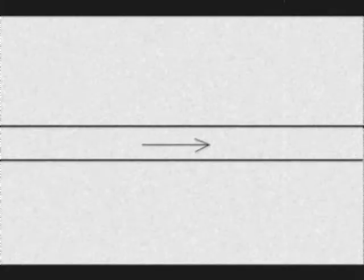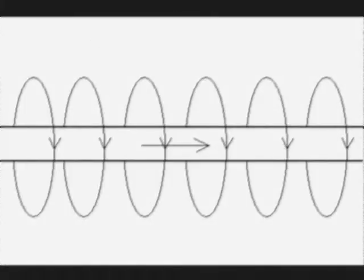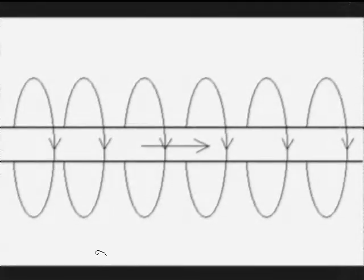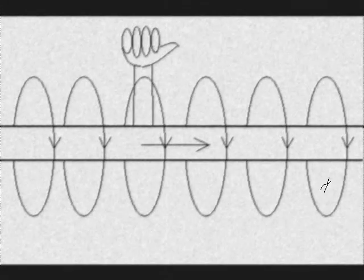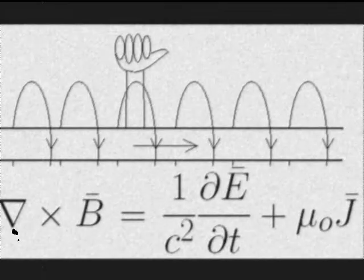And when there is a current, it creates a curly B, in the right hand direction, del cross B.